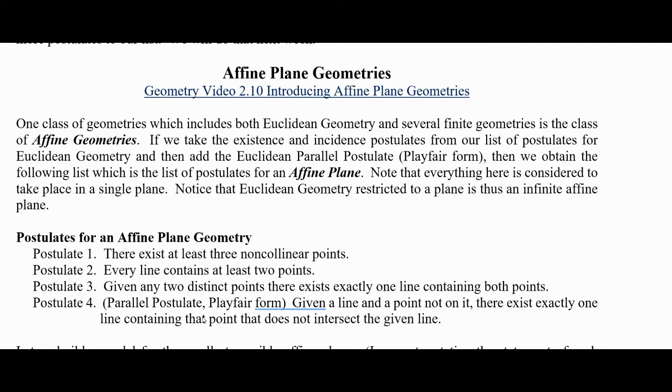And the parallel postulate, this is the Playfair form: Given a line and a point not on it, there exists exactly one line containing that point that does not intersect the given line.